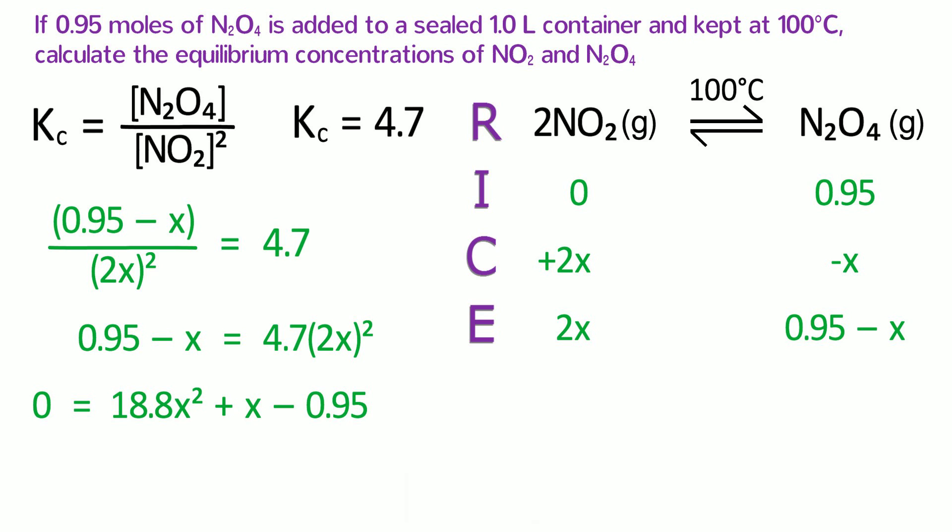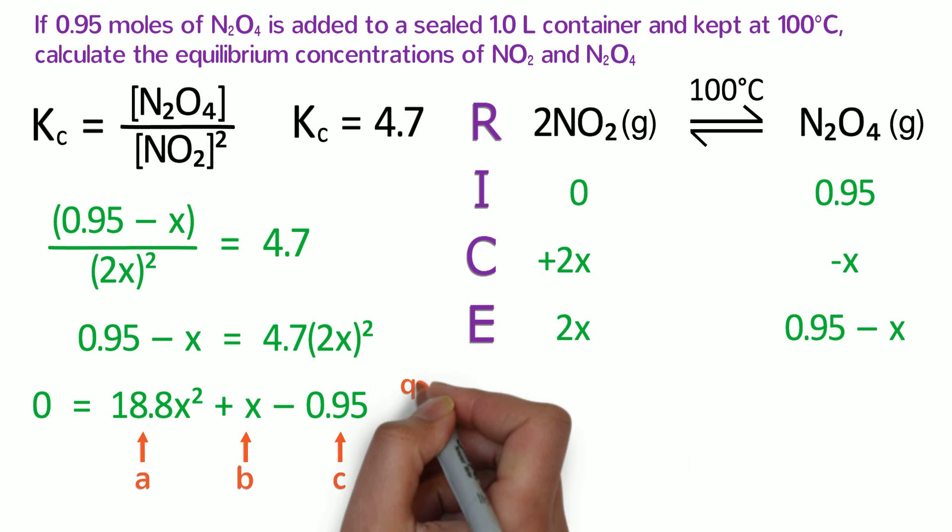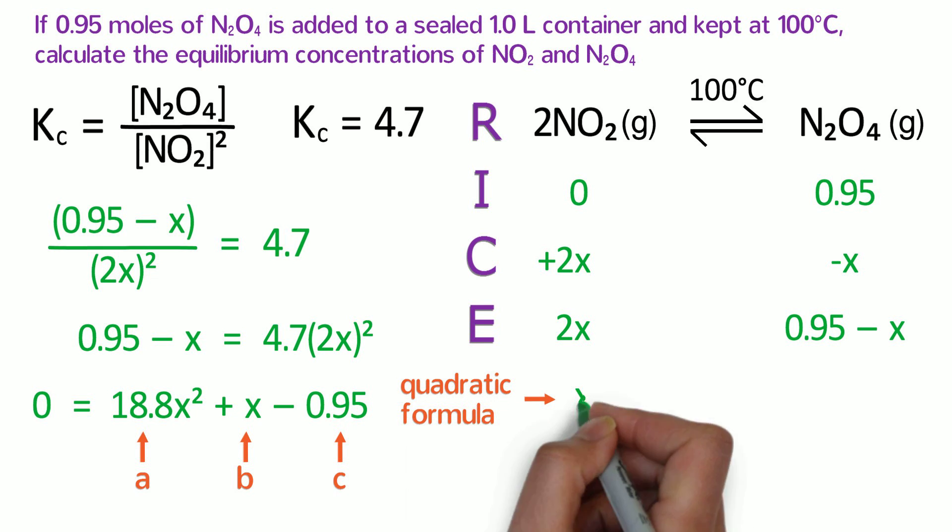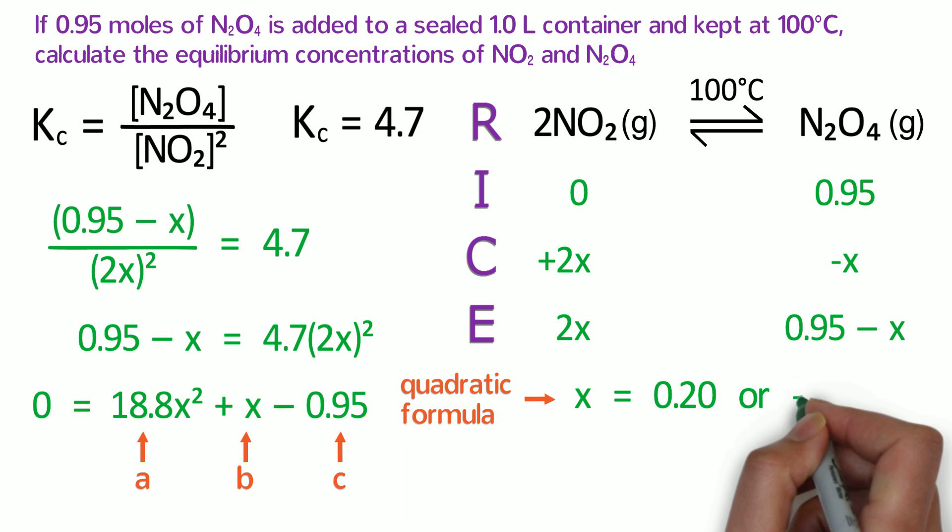Now, we can plug those coefficients into the quadratic formula. Hopefully, you have a calculator that can solve this, or you can program an equation into your calculator to solve it. If not, just use the quadratic formula to calculate it yourself. In this case, A is 18.8, B is 1, and C is negative 0.95. The result from the quadratic formula is that X equals 0.2 or negative 0.25.